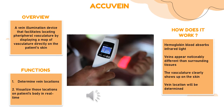The next technology is AccuVein. AccuVein is a vein illumination device that facilitates locating peripheral vasculature by displaying a map of vasculature directly on the patient's skin. In simpler terms, AccuVein is a vein finder that allows doctors or nurses to quickly find a patient's vein without undue hassle or trauma to the patient, and this can be particularly helpful for patients with difficult veins.